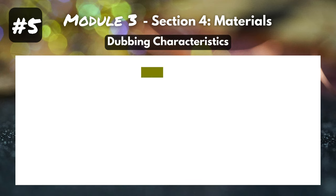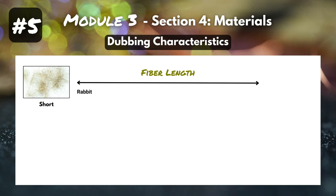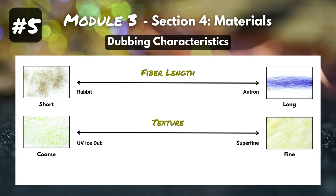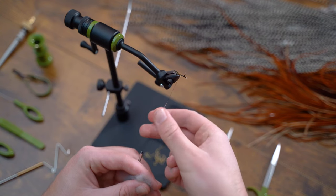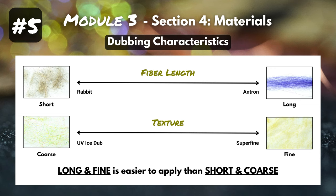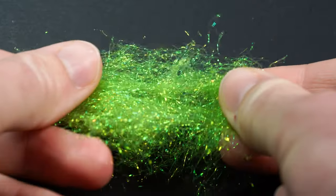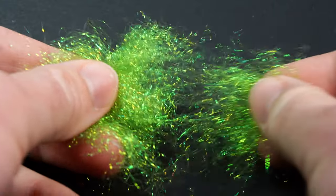Every type of dubbing is going to have different characteristics. One important characteristic is fiber length — on one end of the spectrum you've got some rabbit with quite short fibers, and on the other side you've got Antron with really long fibers. Another important characteristic is texture. UV Ice Dub is very coarse, compared to Superfine dubbing on the right whose texture is much more fine — you can't even really see the individual fibers, that's how fine it is. When attaching dubbing to your thread and forming that dubbing noodle, long and fine dubbing is much easier to apply than short and coarse dubbing. So Superfine dubbing with fine texture and long fiber length is going to be much easier to apply than something like Ice Dub that's more coarse with a shorter fiber length.